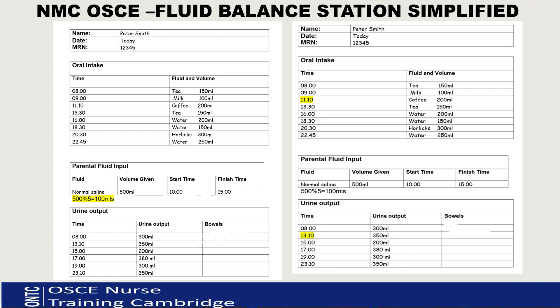We have to program the pump with how many mils per hour the bag is running at. For example, if it needs to start at 10 o'clock and finishes at 3 o'clock, that is 5 hours - 11, 12, 1, 2, 3 - so we give it over 5 hours. What would be the hourly intake? 500 divided by 5 is 100 mils per hour. You can write on the rough sheet if you wish, because the examiner only marks your fluid balance chart.